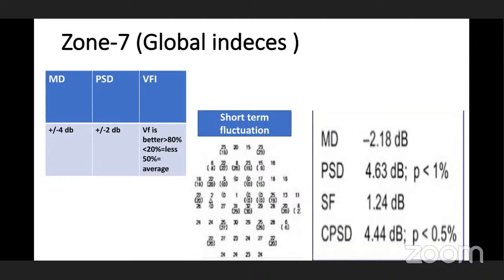PSD — pattern standard deviation — has a normal range of plus or minus 2 decibels. It is derived from pattern deviation and highlights focal loss only. A plus value indicates local scotoma; a minus value indicates generalized scotoma.